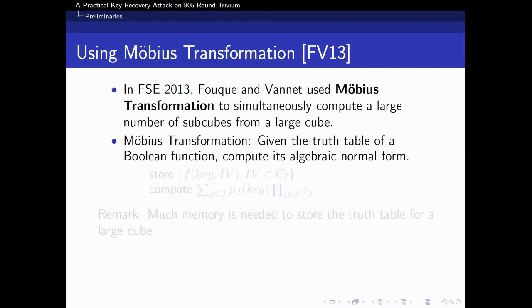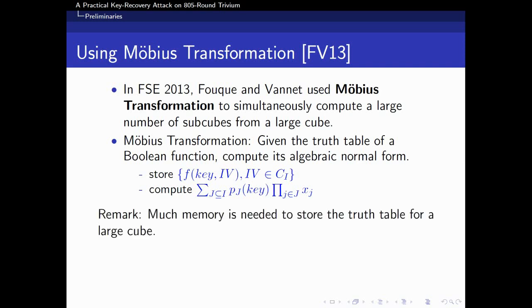Given the truth table of a Boolean function, one could compute its algebraic normal form by using Möbius transformation. When it comes to cube attacks, under any specific key, by storing the value of f on all elements of c_I, one could compute the ANF of f on variables in I. It was noting that much memory is needed to store the truth table for a large cube.